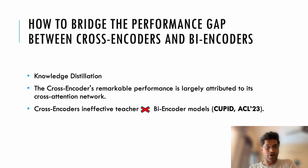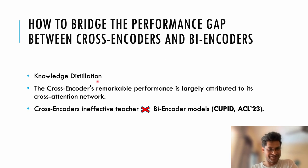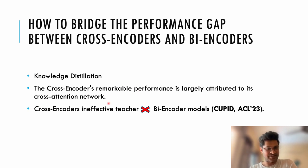Now the question is, how to bridge this performance gap between cross-encoders and bi-encoders? The solution is knowledge distillation. But there is a catch — the superior performance of cross-encoders comes because of the cross-attention network, which is lacking in bi-encoders.